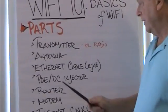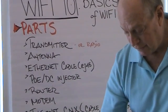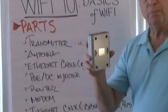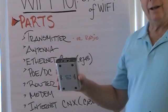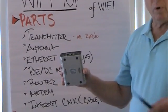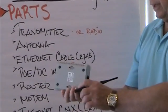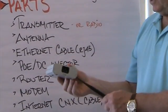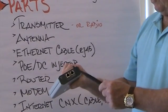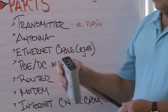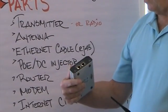The next item is a PoE or DC injector. That's what puts power and data through the same one ethernet cable that we just looked at. It may look like this — it's a power supply with two inputs, one for data and one for power.